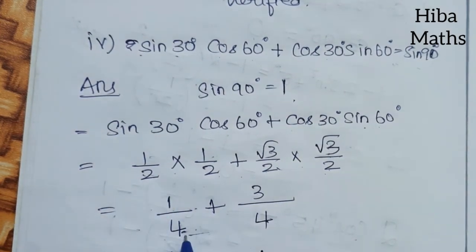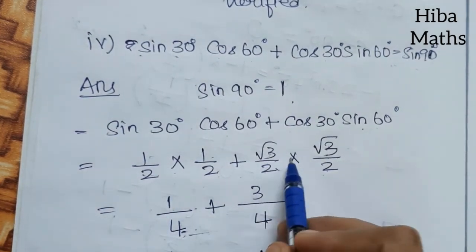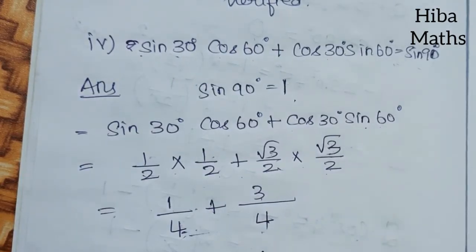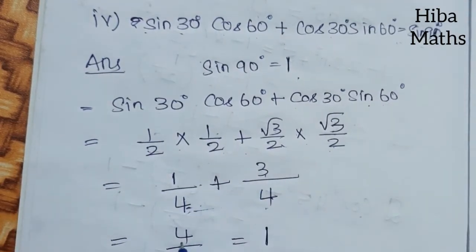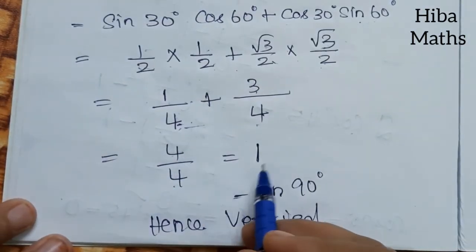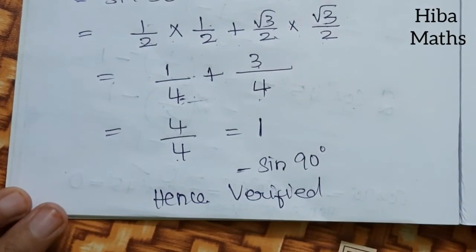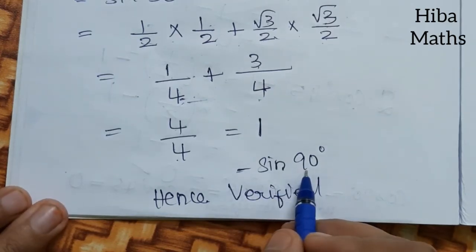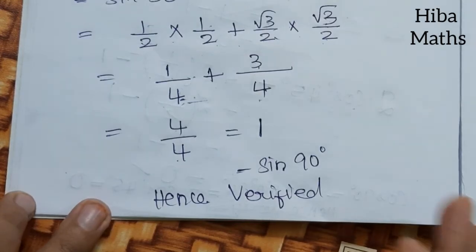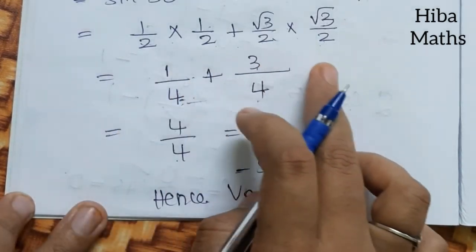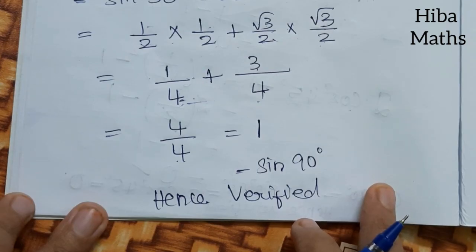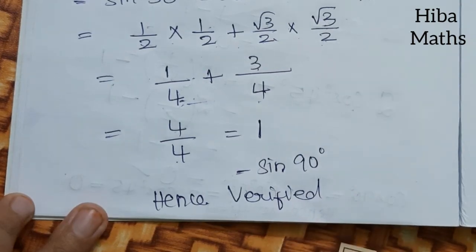Solving: 1×1 = 1 over 2×2 = 4, plus 3 over 4. So 1/4 + 3/4 = 4/4 = 1. The answer equals 1, which equals sin90°. The equality is verified.